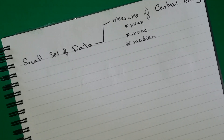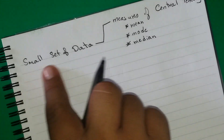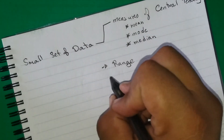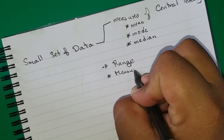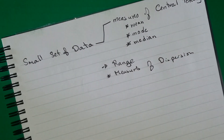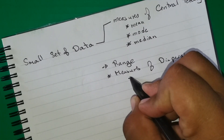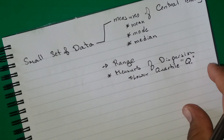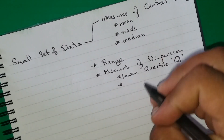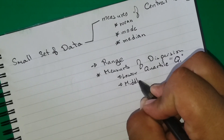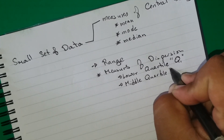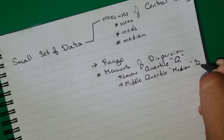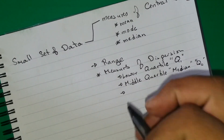In this episode we want to continue with a small set of data, but we want to take a look at the range and the measures of dispersion — which includes the lower quartile (Q1), and the middle quartile (Q2), which is the median.